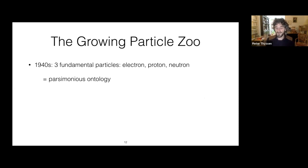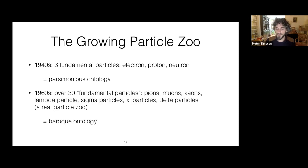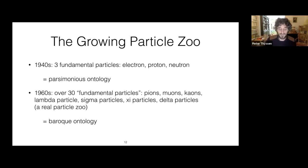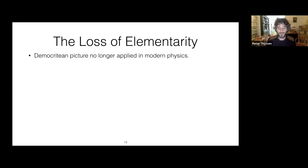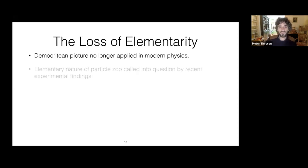But if in the early 1940s the universe was still a simple place composed of only three fundamental particles, by the early 1960s the universe had become horribly complicated, due to the discovery of over 30 fundamental particles such as pions, muons, kaons, lambda particles, sigma particles, xi particles, and delta particles. The parsimonious ontology had given way to a baroque ontology in the 1960s, with a real particle zoo. For Heisenberg, this showed that the traditional Democritian picture no longer applied. The problem was that the elementary nature of these particles was being called into question due to recent experimental findings.